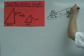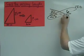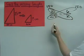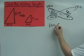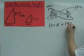6 times 25 is 150, so 10 times something is also 150.